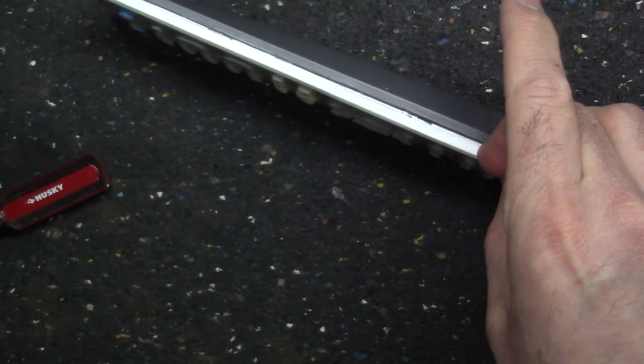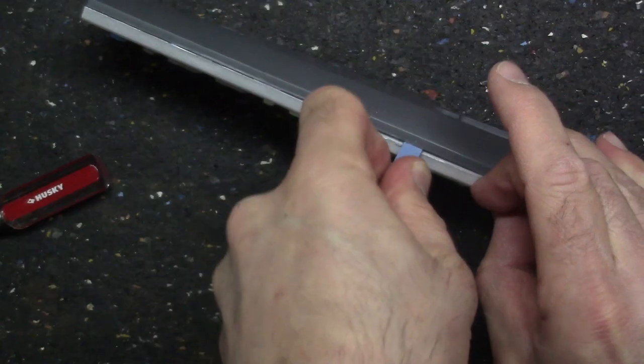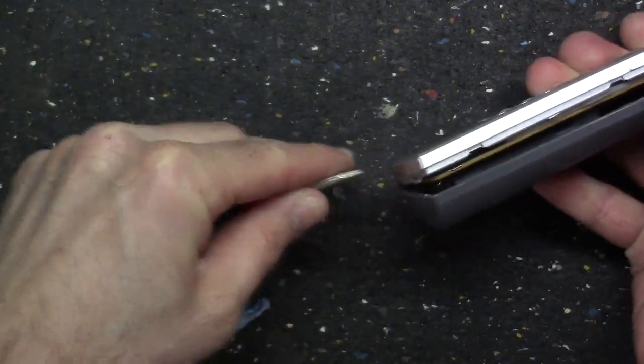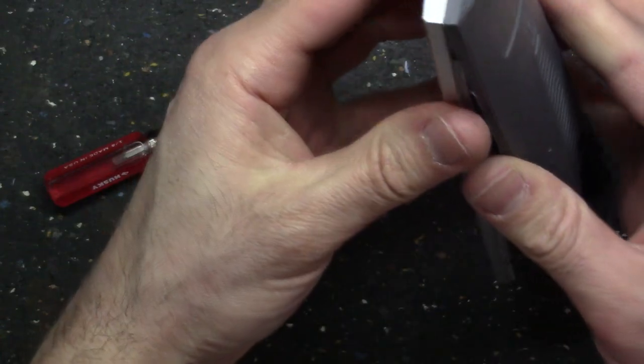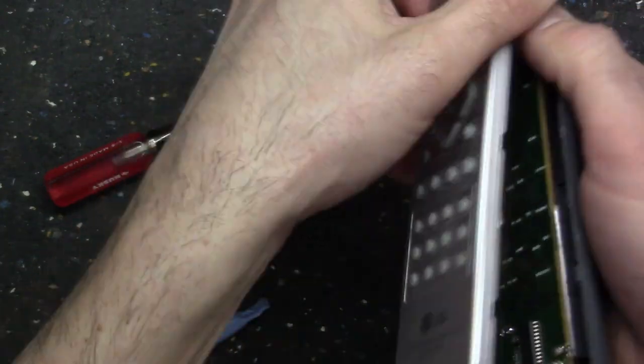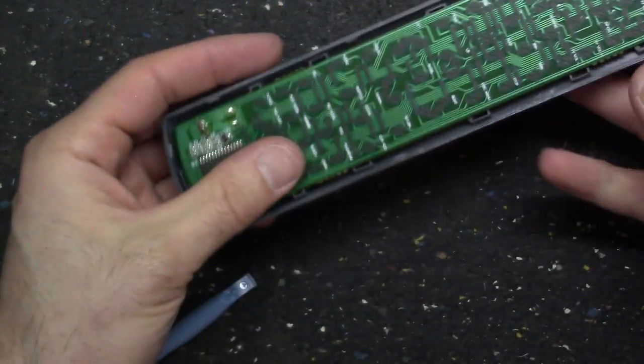But usually you got to do something like this. You're going to make a few marks on the plastic, but it's still better than a totally dead remote. So just run your tools along and separate all the clips and it should pop open.